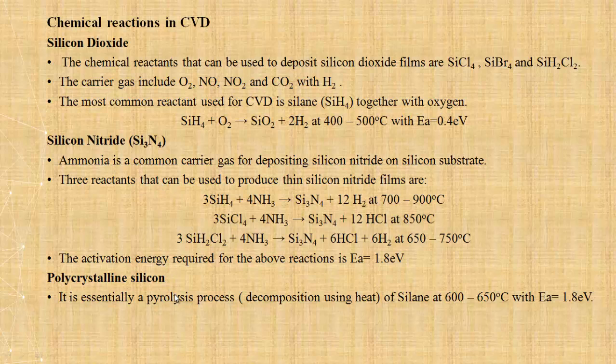For silicon dioxide deposition, the chemical reactants include SiH4, SiH2, and SiH2Cl2. The carrier gases include O2, N2O, NO2, and CO2 with H2. The most common reactant used for CVD is SiH4 together with oxygen. The reaction is SiH4 + O2 → SiO2 + 2H2 at 400-500°C with activation energy of 0.4 eV.